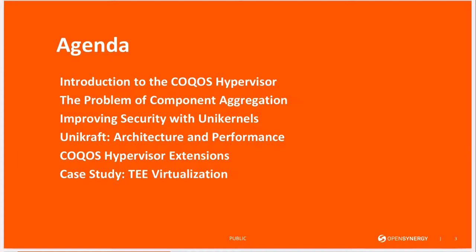I'll move on to show how Unikernels provide a suitable platform for building isolated components and introduce the Unikraft project, which allows us to build highly specialized operating system images. We will focus on Unikraft's architecture and have a look at some data showing that Unikernels produced by Unikraft are characterized by small size, small memory footprint, and high performance.